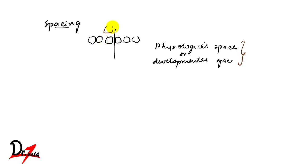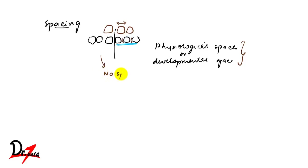The permanent teeth inside the jaw are wider as well as longer. This extra spacing will help them erupt when the primary teeth exfoliate. If you see a child with no spacing, you can predict that in the future he will have malocclusion — that is, crowding.